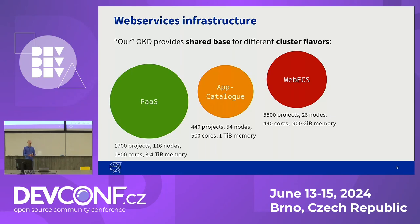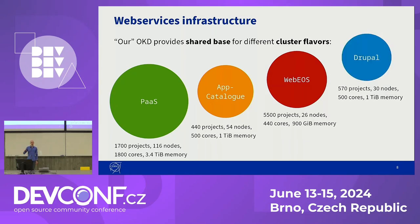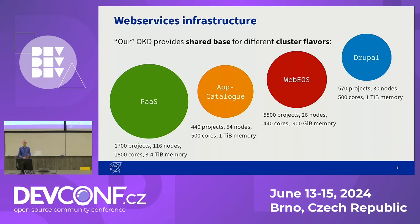Then there is also the WebEOS case, which essentially exposes part of the EOS file system that at CERN is used to store all of the experiment data. This is very useful if you just want to share a particular subset of the data, or maybe make some visualizations on top. And finally, the most advanced use case is our Drupal cluster, which is currently the most widely used CMS at CERN, where our colleagues from the Drupal team have developed a very sophisticated operator that takes care of setting up the Drupal websites, managing database upgrades in the background, applying schema migrations, etc.